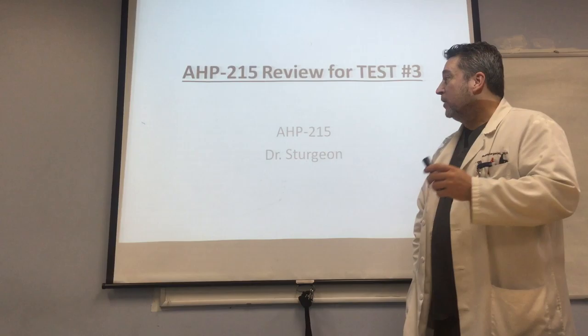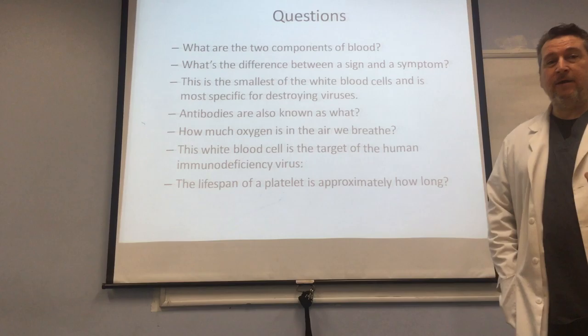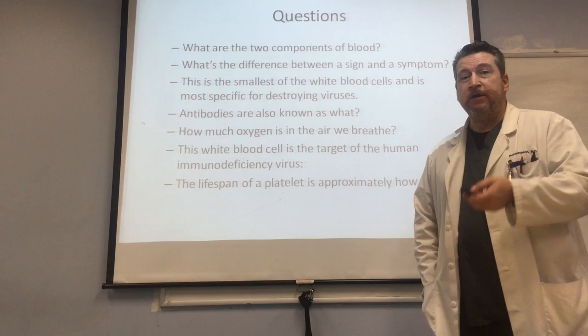What are the two components of blood? Remember, they are made up of basically plasma — the liquid part — and the formed elements: red blood cells, white blood cells, and platelets.